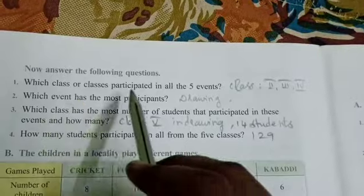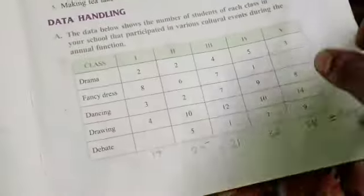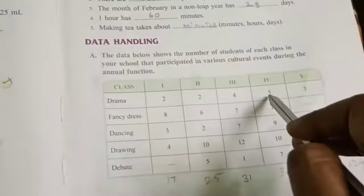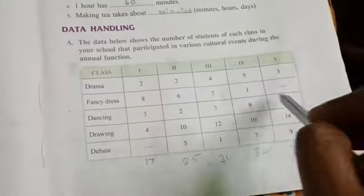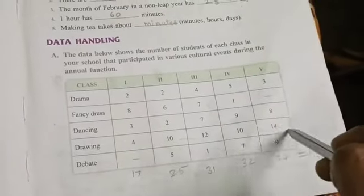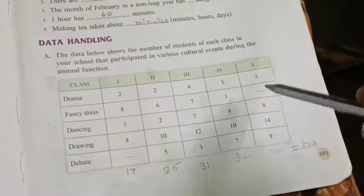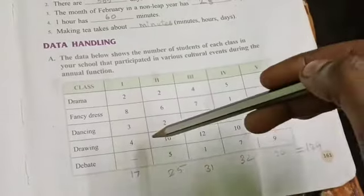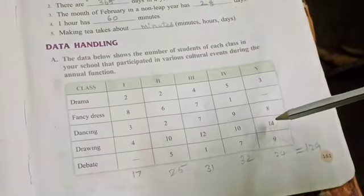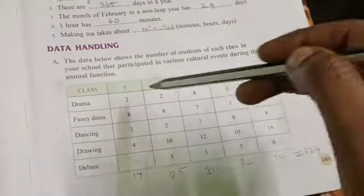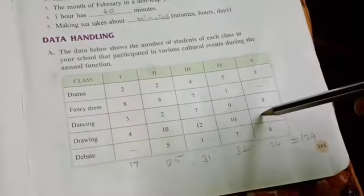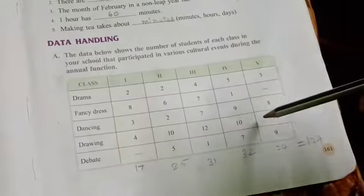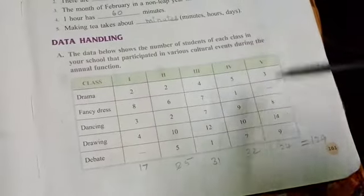Which event has the most participants? You will see the events: 2, 4, 5, 3, 8, 6, 7, 1, 3, 2, 7, 9, 8, 4, 10, 12, 10, 10, 14, 5, 1, 7, 9. You will see the numbers - this one two-digit number is most, so this is the highest one. Or otherwise you add all the terms, write it in your note, then find which one is bigger. But you will see the number - drawing is where the most students participate. So the answer is drawing.